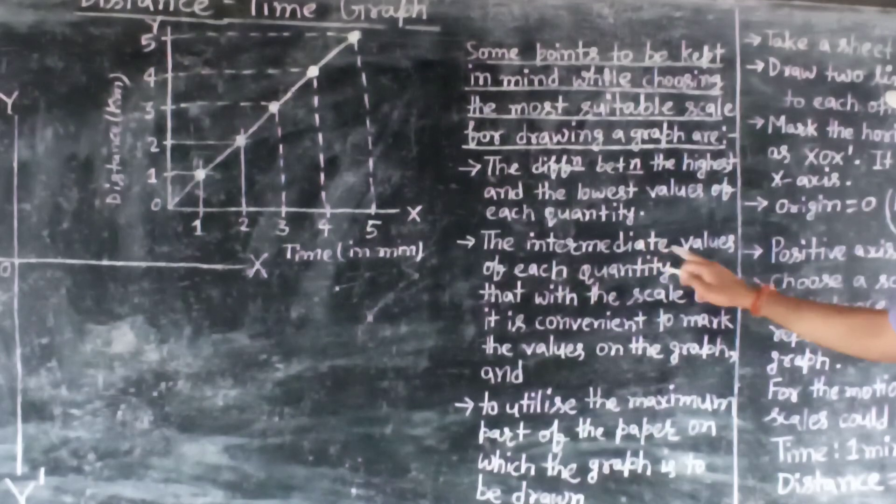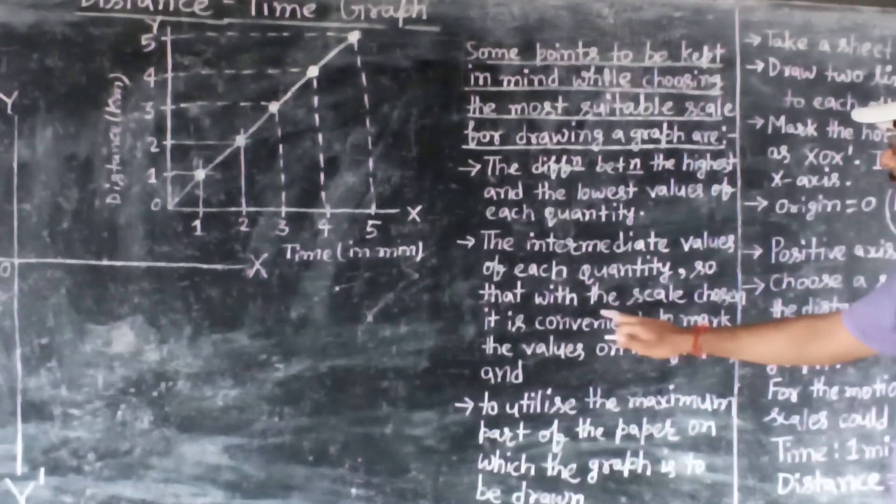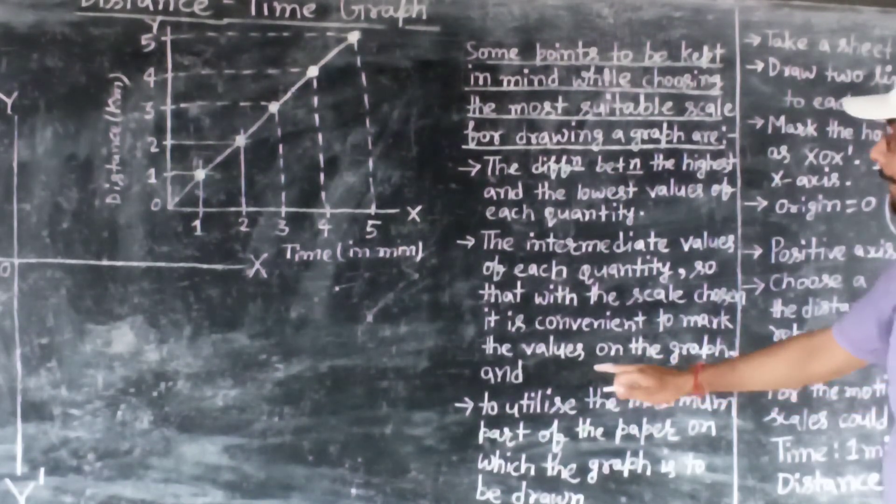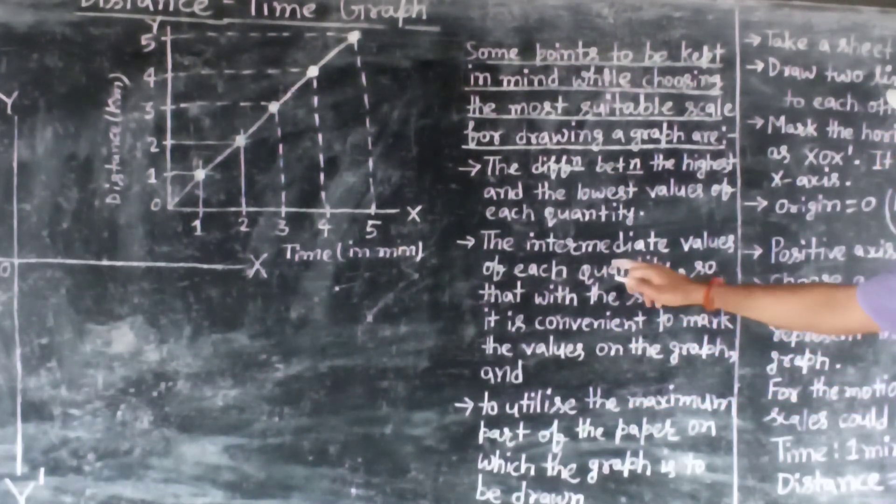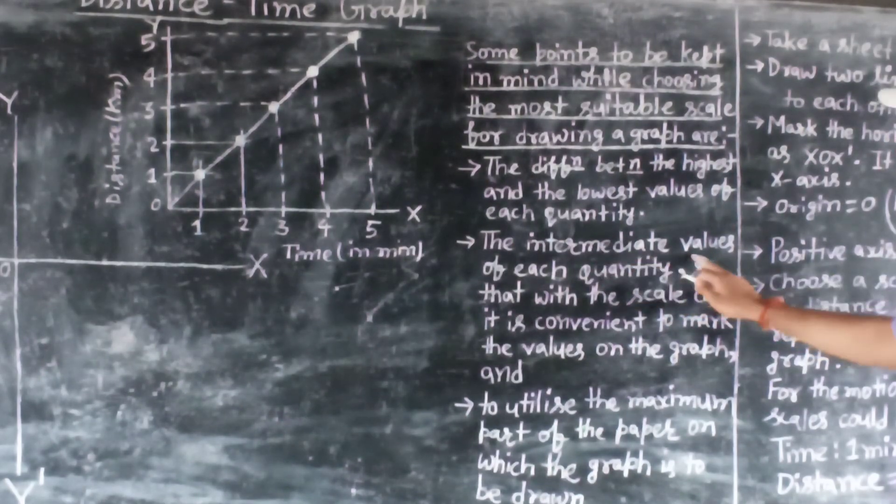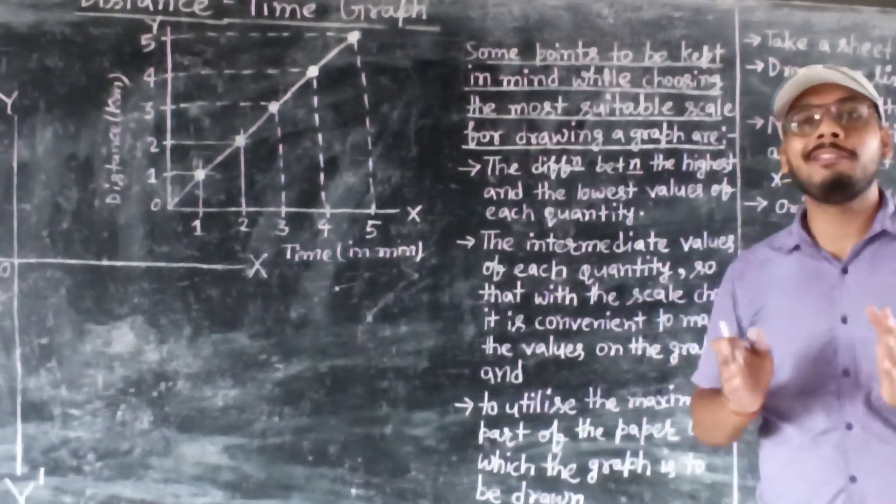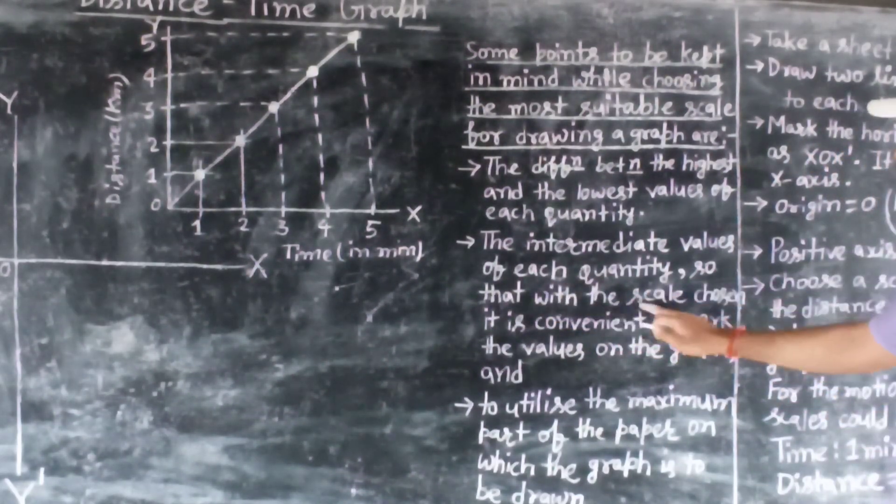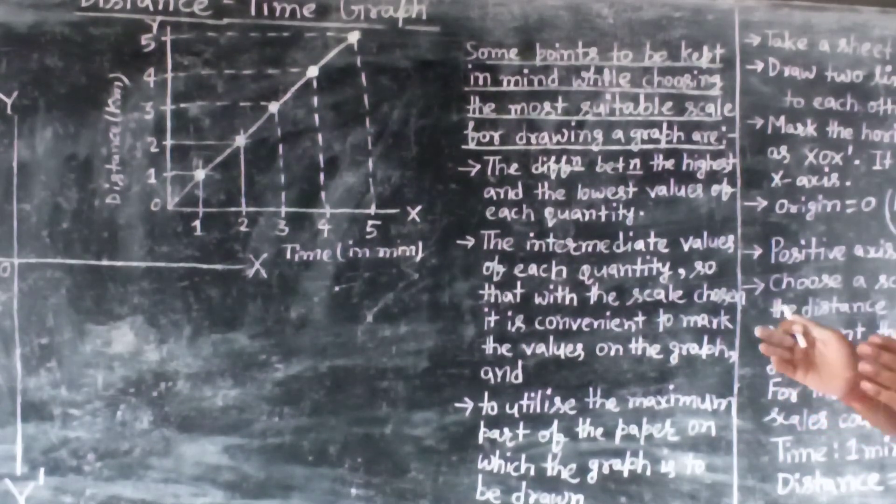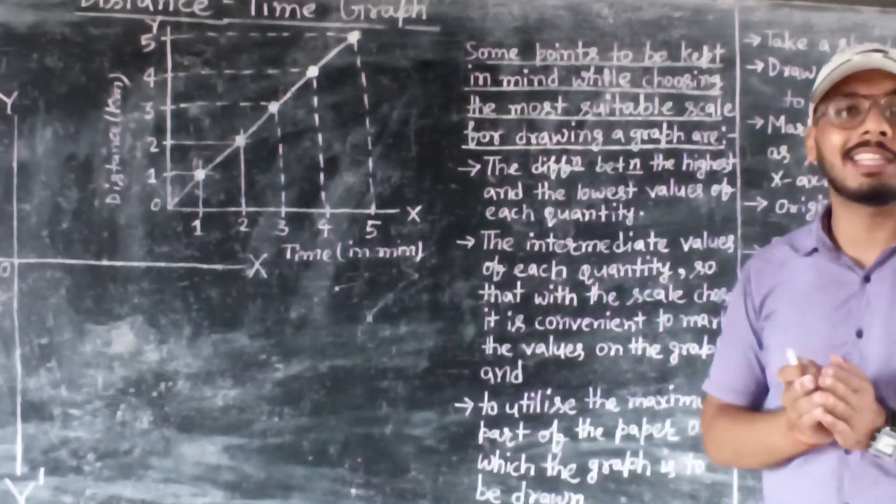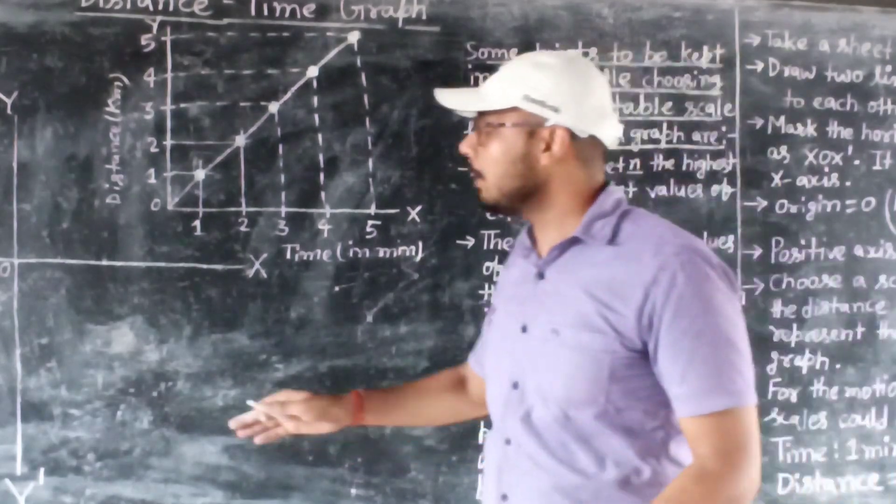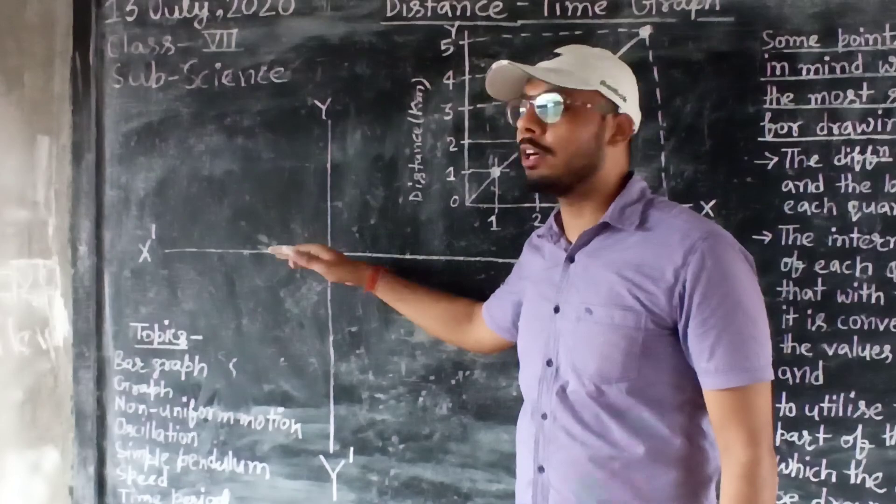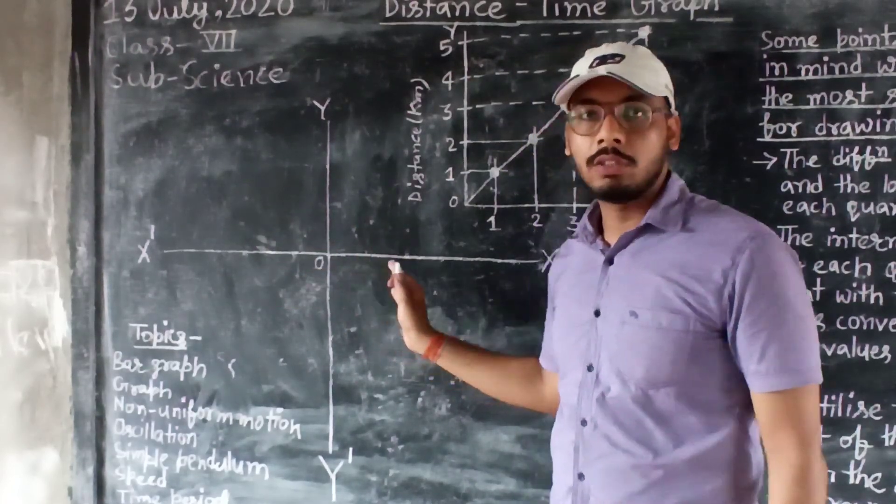And second, the intermediate values of each quantity, so that with the scale it is convenient to mark the values on the graph. So the next important thing is the intermediate values. Intermediate values means the values in between quantities, so that with the scale it is convenient to fit. This must be as per our graph paper. It cannot be beyond that.